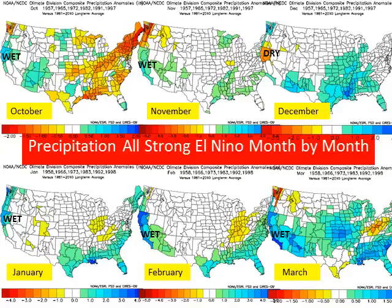This map breaks down each month of historically strong El Niños. In October you get a wet signal across Northern California, then it covers most of the state in November, and dries out a little in December. It returns in January across Northern California, and then February and March are the wettest months. This doesn't guarantee that this upcoming season will work exactly like this, but it is important to note that February and March are historically very wet with strong El Niños.